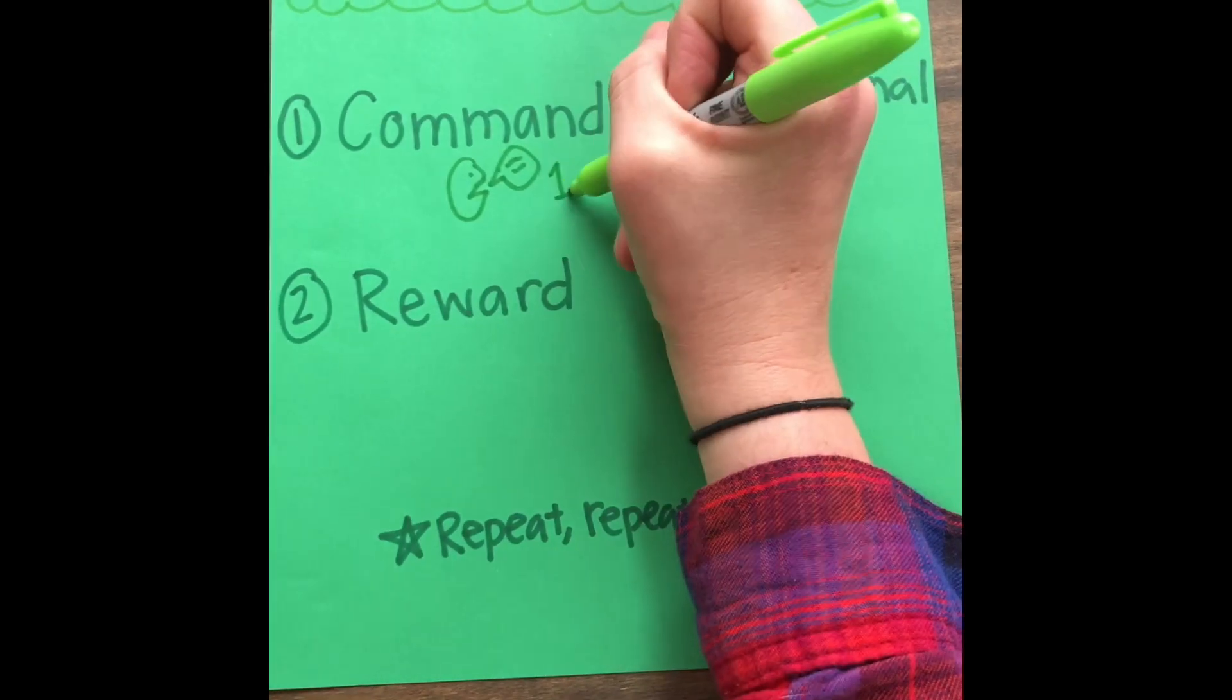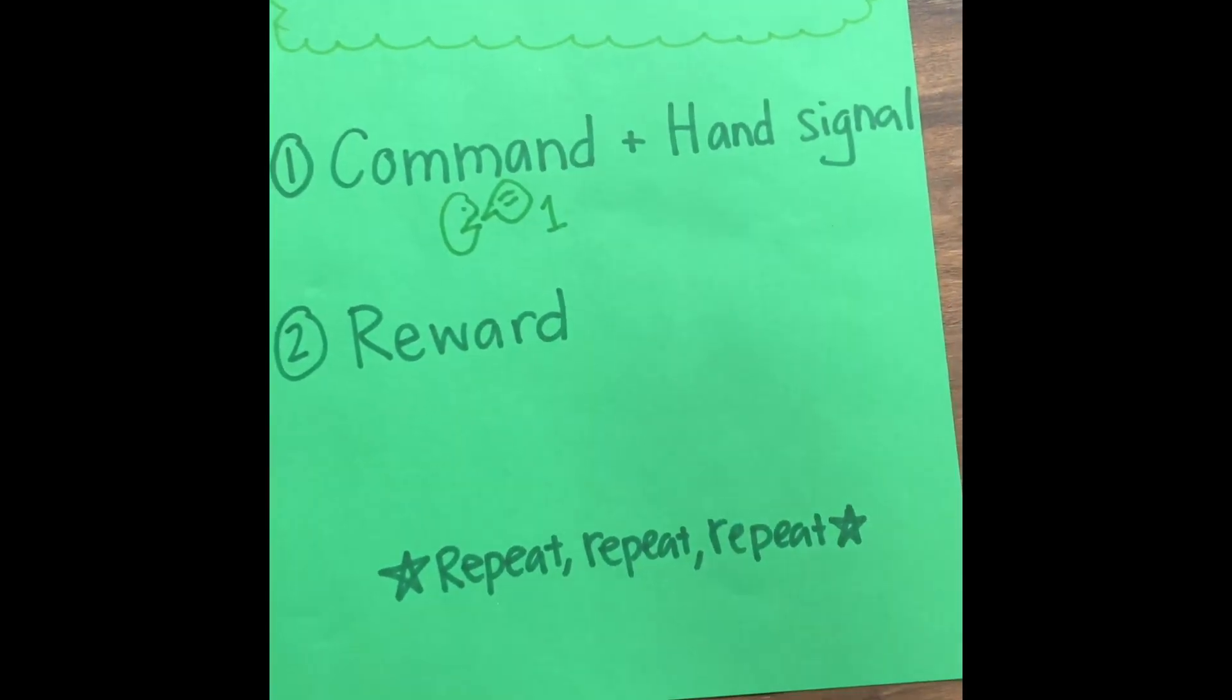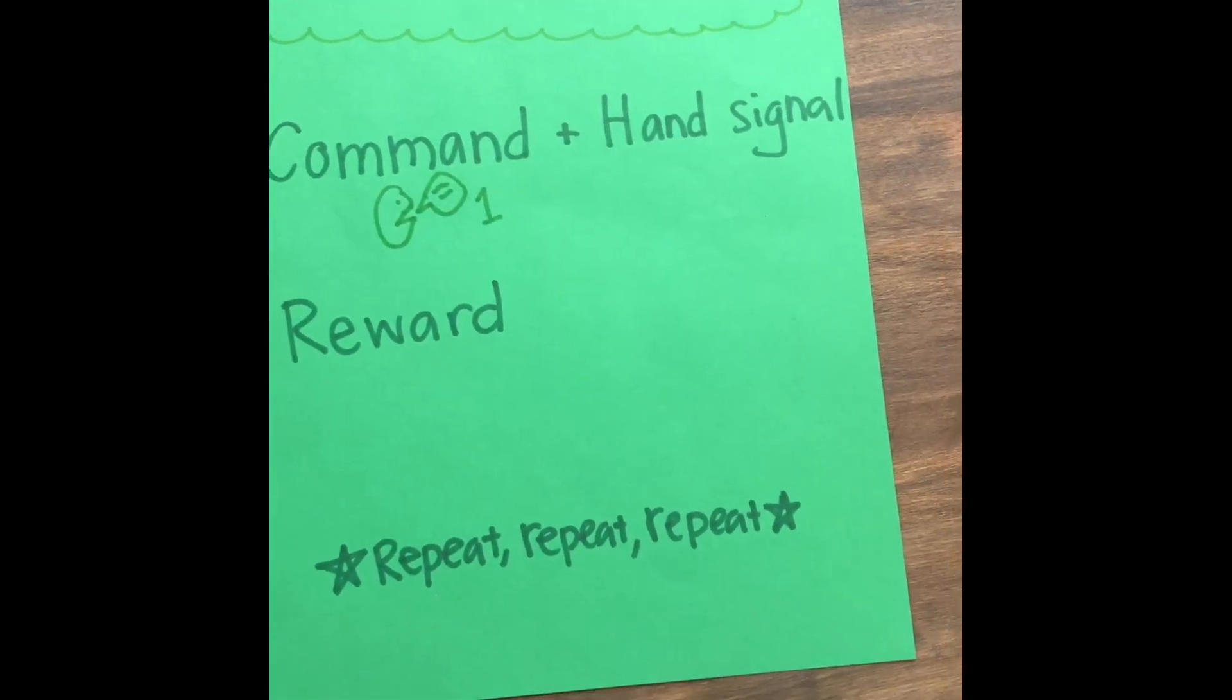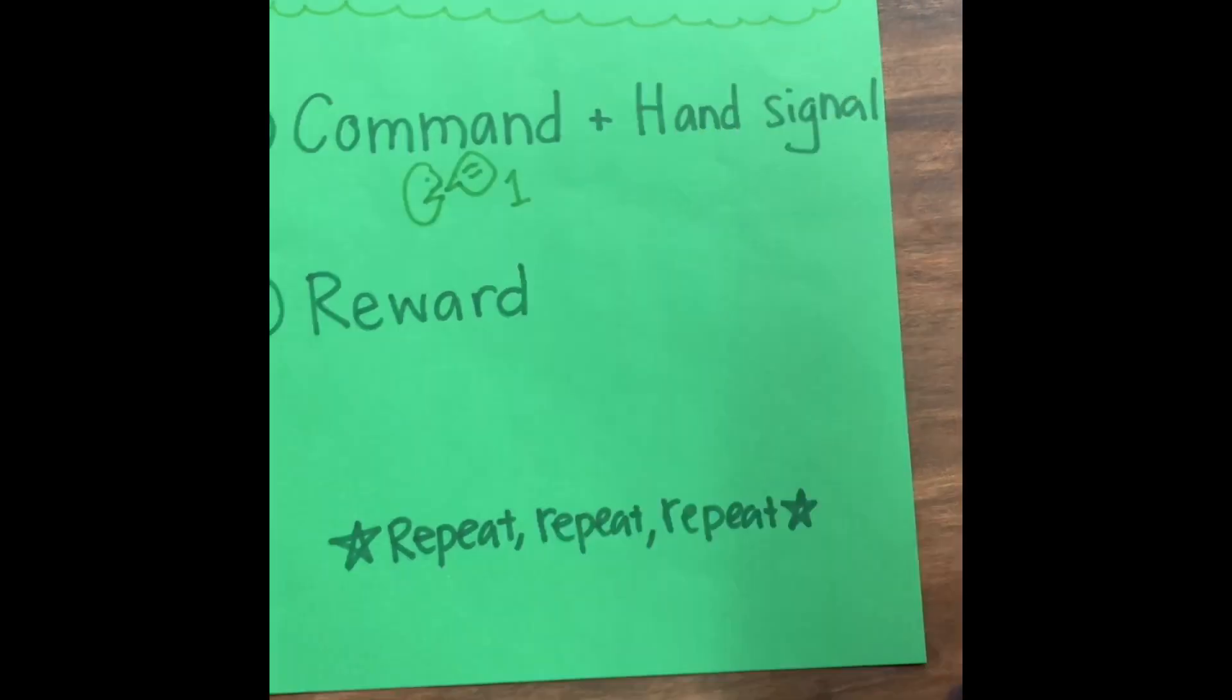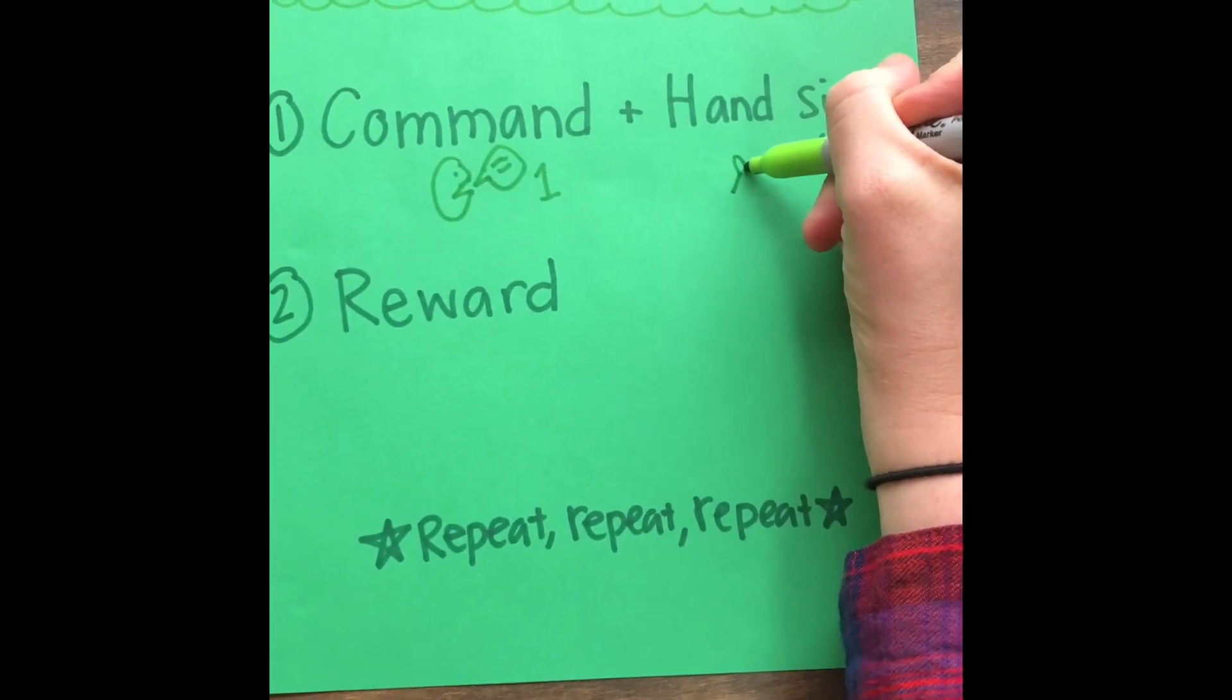So you just want to pick one word like sit, stay, paw, those kinds of things, and then you're gonna pair that command with a hand signal.